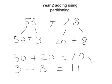So when you add 70 add 11, the answer will give you 81.